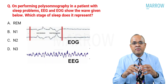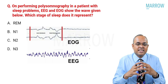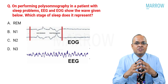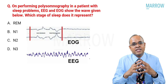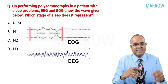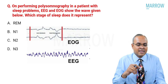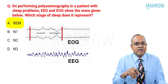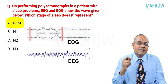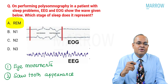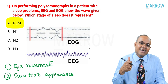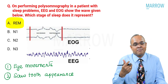In the next question, on performing polysomnography in a patient with sleep issues, they have seen the EEG recording and the EOG recording and asked which stage of sleep the person belongs to: REM, N1, N2, or N3. They're talking about sawtooth appearance of waves and eye movements. When they mention eye movements and sawtooth waves, we know we are talking about REM sleep, because in REM sleep you typically see eye movements and sawtooth appearance of waves.